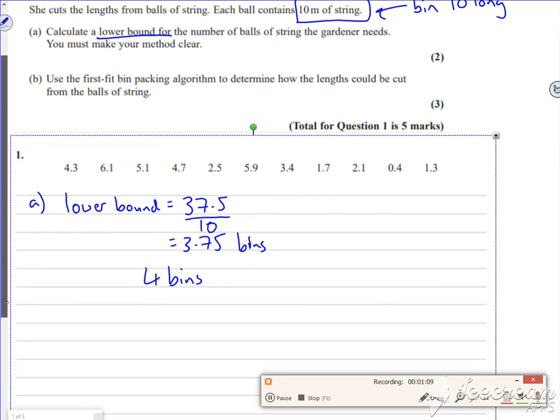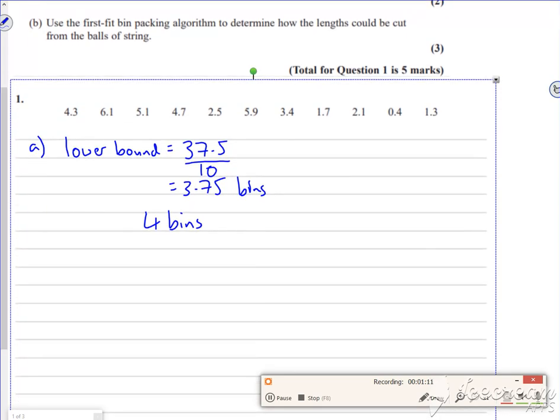So then it says use first fit. Now this is first fit, not decreasing. You do that after a sort, small to big, and you put the small ones in, sorry, big to small and put the big ones in first. But this is just bin packing.